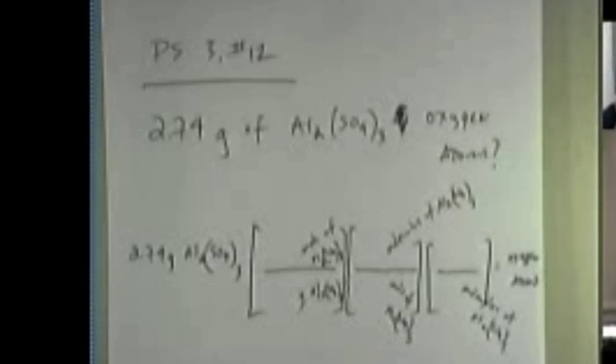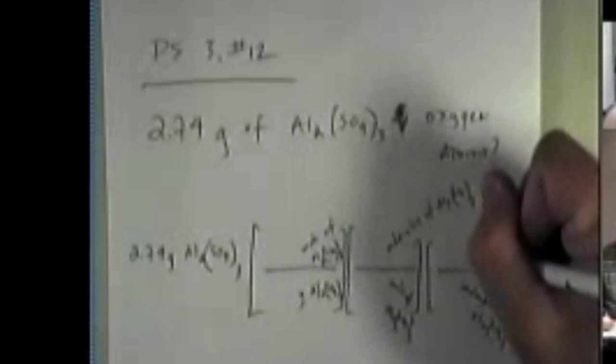Now, I want to get to oxygen atoms. I want you to picture in your brain a molecule of aluminum sulfate. How many aluminum atoms does it have? It's got two aluminum atoms bonded together in some way. How many sulfur atoms does it have? It's got three. How many oxygens does each individual aluminum sulfate have? It's got 12. Can I directly relate molecules of aluminum sulfate to atoms of oxygen? If I have one molecule of aluminum sulfate, I have 12 atoms of oxygen, don't I?